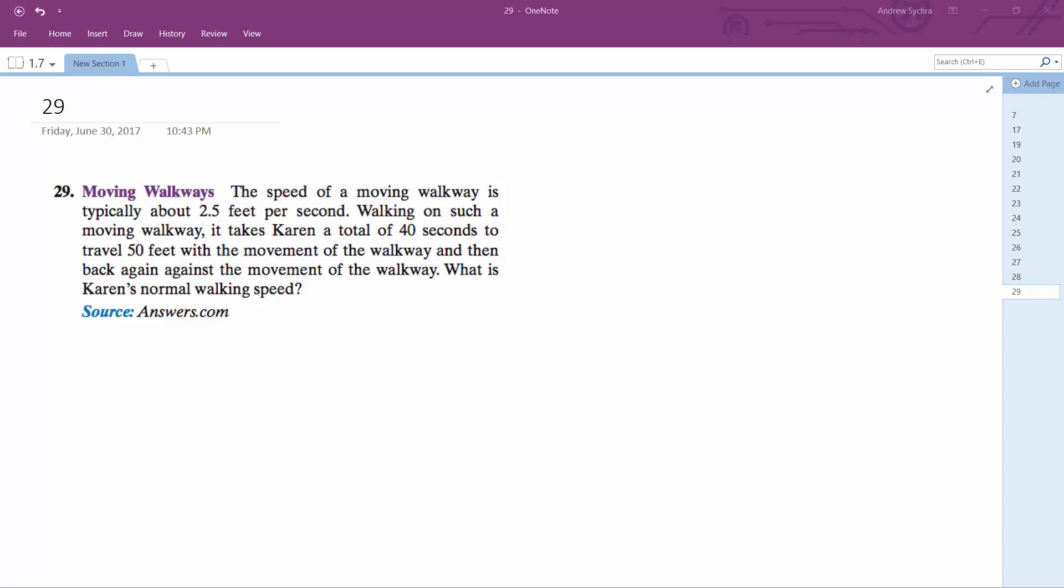We have someone whose speed on a moving walkway is typically 2.5 feet per second. Walking on such a moving walkway, it takes Karen a total of 40 seconds to travel 50 feet with the movement of the walkway and then back again against the movement of the walkway. What is Karen's normal walking speed?